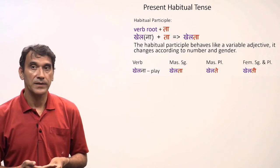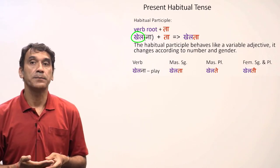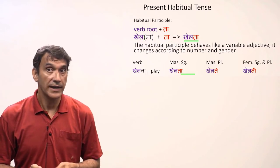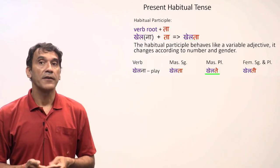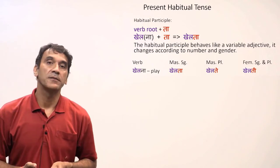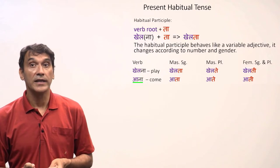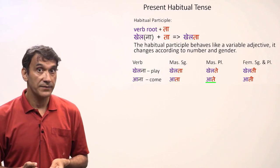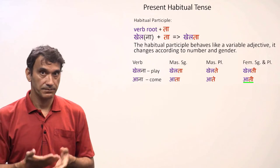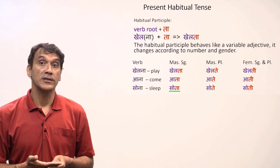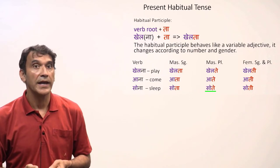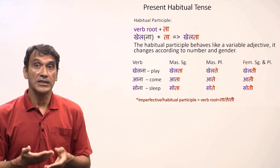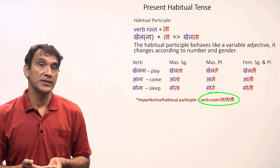Let's take some examples. The verb 'khailna' means to play; the root is 'khail.' Adding the suffix gives 'khailtaa' for masculine singular, 'khailtay' for masculine plural, and 'khailti' for feminine singular and plural. The verb 'aana' means to come; the root is 'aa,' giving 'aata' (masculine singular), 'aate' (masculine plural), and 'aati' (feminine). The verb 'sona' means to sleep, giving 'sota,' 'sote,' and 'soti.' The formula: add ta/te/ti to the verb root depending on number and gender.